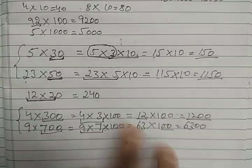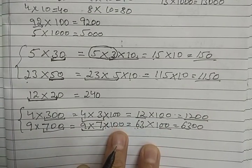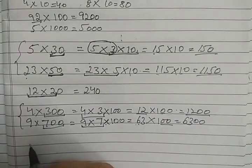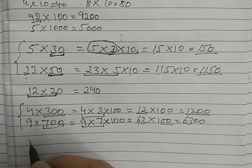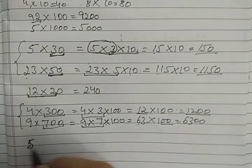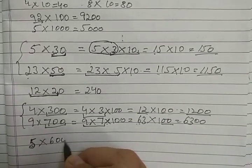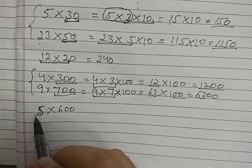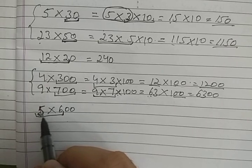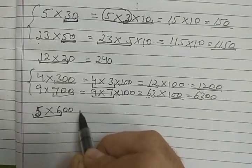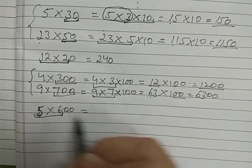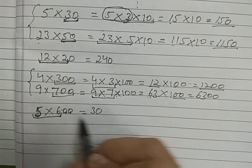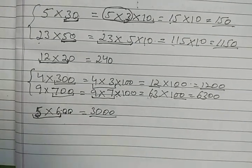Now how can we solve this orally? Take 5 multiplied by 600. What we have to do is multiply the non-zero numbers: 5 sixes are 30. Then count the number of zeros — there are two zeros — so write these two zeros on the right side. So 3000 is our answer.